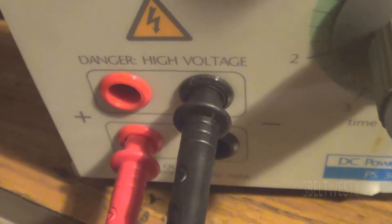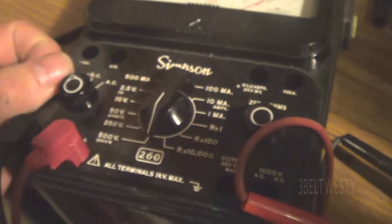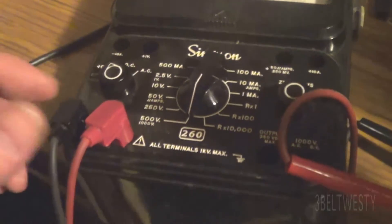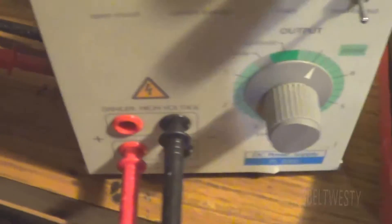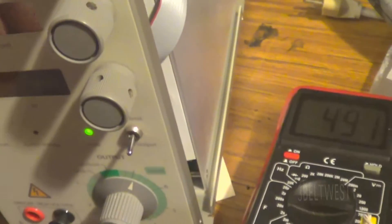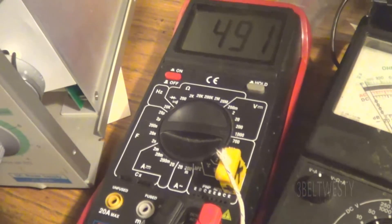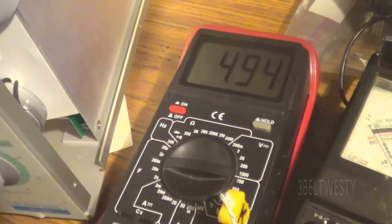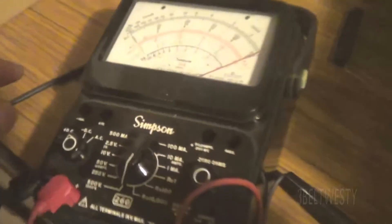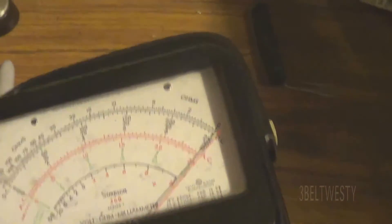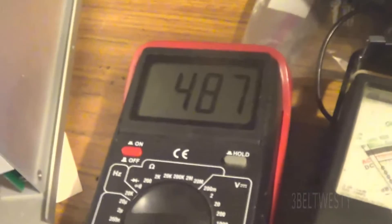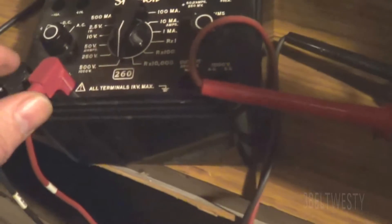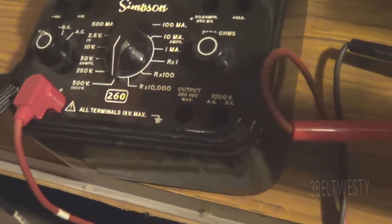Danger, high voltage. Okay, got the Simpson 260 here plus DC. I'm using the common and the positive. Just the high voltage in the supply just here versus the Harbor Freight. It's about 500 volts. Simpson's a little bit pegged, we're down here.